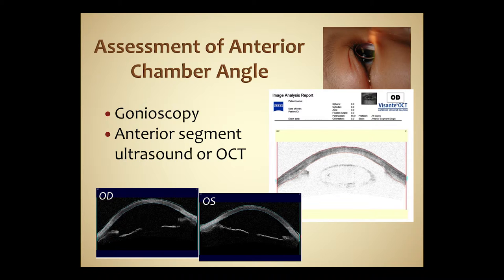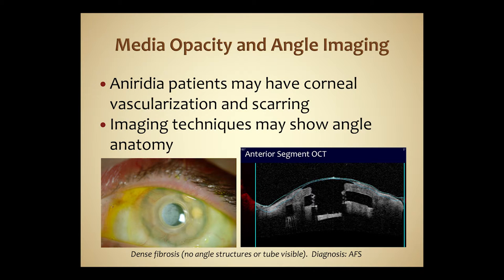For assessing the anterior chamber angle we still perform gonioscopy, and in many cases we can see the angle clearly. When we can't, anterior segment OCT is very helpful. Shown on the right panel is an aniridia patient with an artificial iris implant — the lower panels show an open angle on the Visante OCT, which helps us analyze the angle. When patients have significant media opacity from aniridic keratopathy, we can still visualize the angle. In one patient with a keratoprosthesis, we could appreciate significant aniridia fibrosis syndrome causing fibrosis behind the optic of the K-Pro and in the angle, contributing to secondary glaucoma.